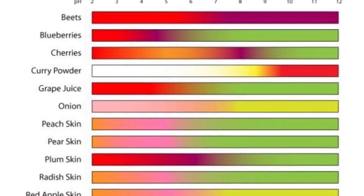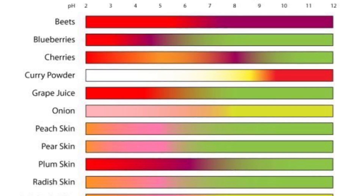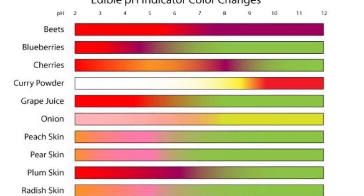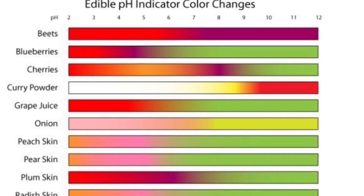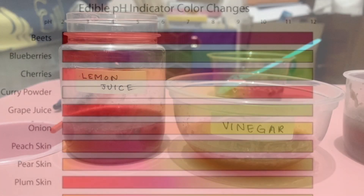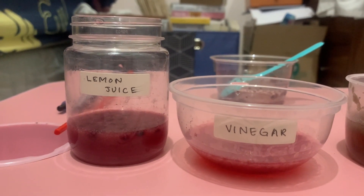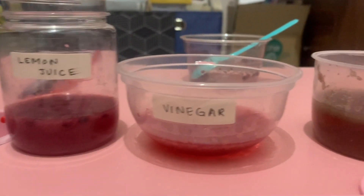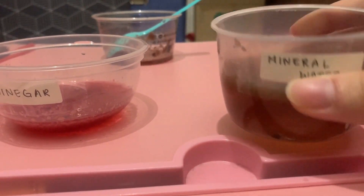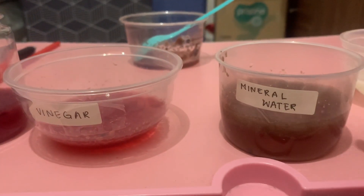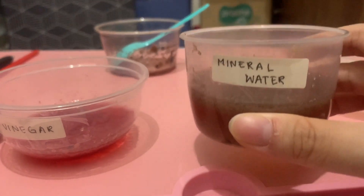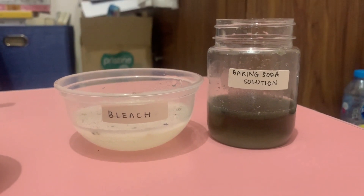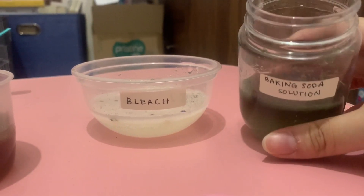For the blueberries, we can see from the table that if the solutions are acids, it will change the color into red. If it's neutral, it will change the color into purple or maybe brown. And if it's base, it will change the color into green or maybe yellow. We can see that lemon juice and vinegar both turn into red — that means both solutions are acids. Mineral water has the same color as the blueberry water, so mineral water is neutral. And for bleach and baking soda, both of them turn into green and soft green, which means that both of them are base solutions.